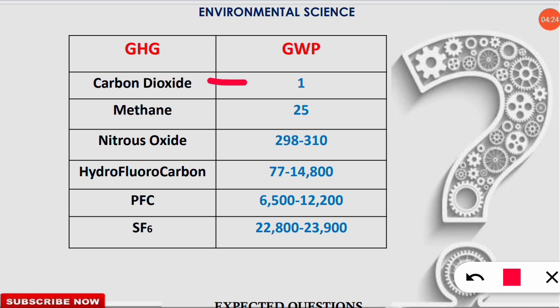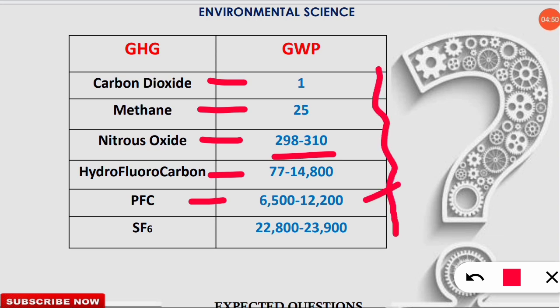The global warming potential values are: CO₂ = 1, methane (CH₄) = 25, nitrous oxide (N₂O) = 298–310, HFCs = 77 to 14,800, perfluorocarbon compounds (PFCs) = 6,500 to 12,200. The highest GWP among these greenhouse gases is SF₆ — sulfur hexafluoride — with a GWP of 22,800 to 23,900. Note down this table in your notes.